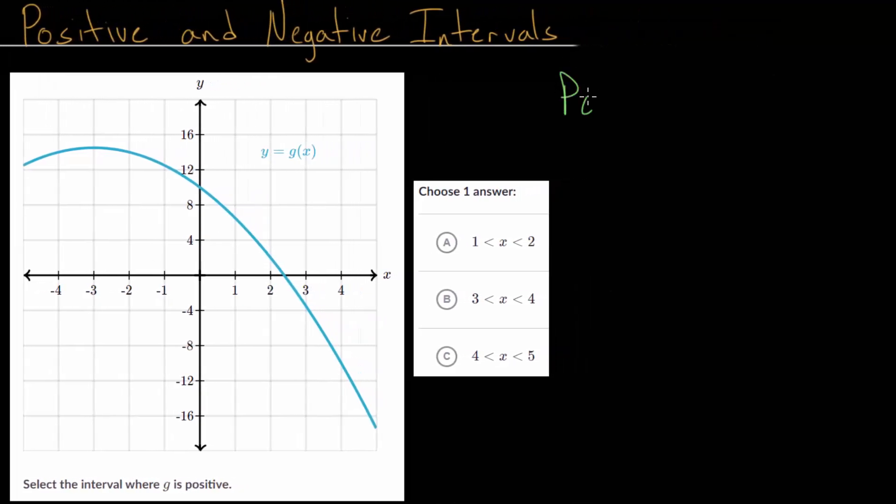Let's start with a positive interval, and these definitions are fairly simple. The basic idea is that a positive interval consists of the x values for which our function y equals g(x), or whatever it is - for this case it is g(x), but it could be any function - is when the function is bigger than zero.